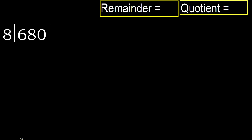680 divided by 8. 6 is less, therefore next 68 is not less. With 68, 8 multiplied by which number is nearest to 68 but not greater? 8 multiplied by 9 is 72, which is greater. 8 multiplied by 8 is 64, which is not greater. Subtract: 68 minus 64 is 4.